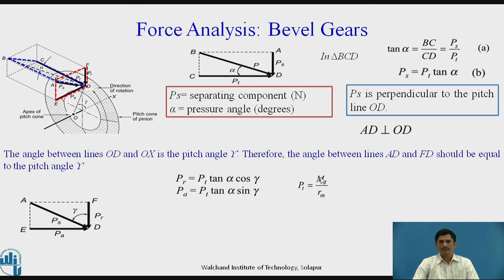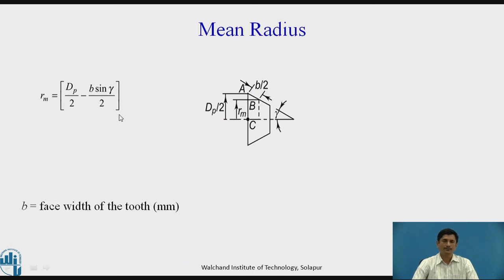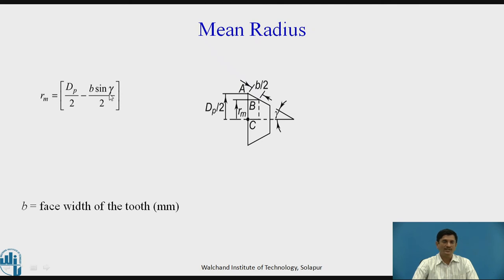We know that PT equals MT divided by RM, where RM is the mean radius and MT is the torque transmitted by the gears. RM equals DP divided by 2, where DP is the pitch diameter. This value is the radius minus B sin gamma divided by 2, since the pitch point is located at the midpoint along the face width. Therefore RM equals (DP/2) minus (B sin gamma / 2), where B is the face width of the tooth in millimeters.